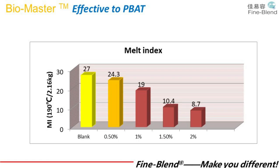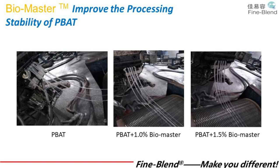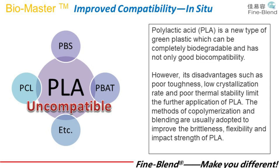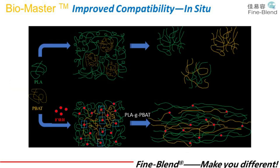Bio Master is also effective for PBAT. The figure shows the change of melt index of chain extender with different addition amounts. Bio Master chain extender improves the processing stability of PBAT. Having discussed the data for PLA and PBAT, we now move to the third part: the role of chain extender as a compatibilizer.